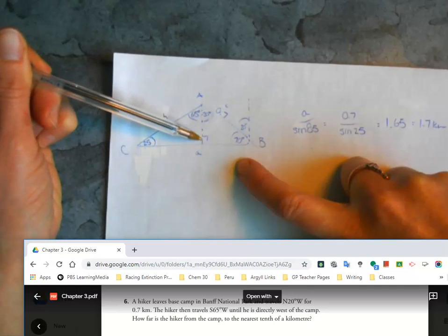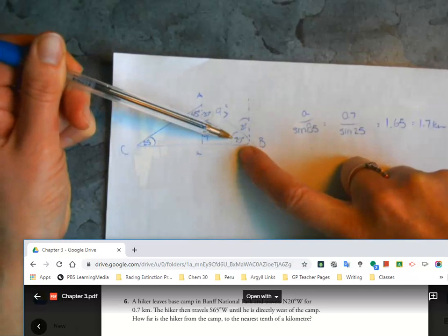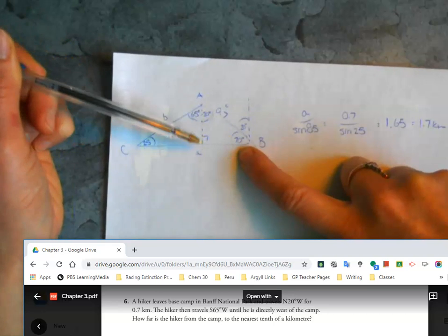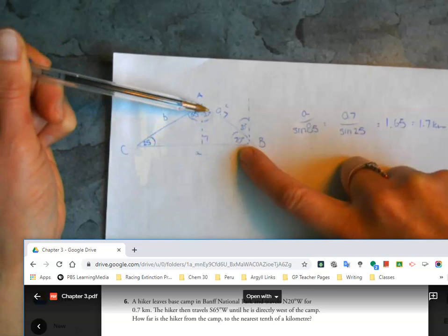This angle is 70 degrees so I can figure out what this angle is by doing 180 minus 90 minus 70, which would give me 20 degrees over in this corner. So total this angle here is 85 degrees.